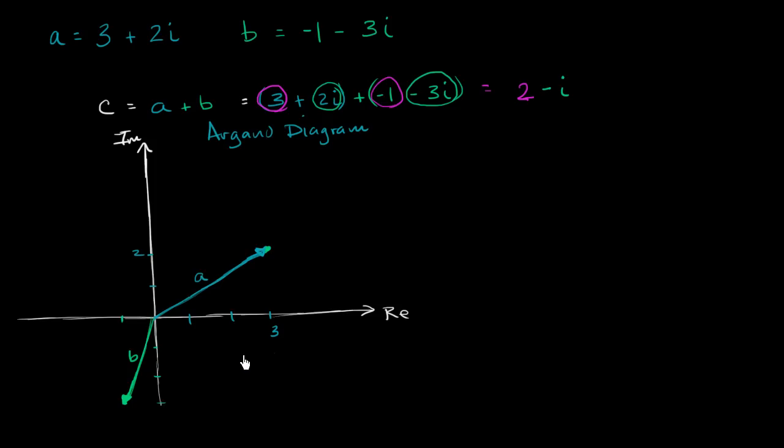So when you go down 3 and you go to the left 1, it's going to put you right over here. So all I've done is I've shifted b over to this part so that its tail is at the head of a. So it goes right over there.